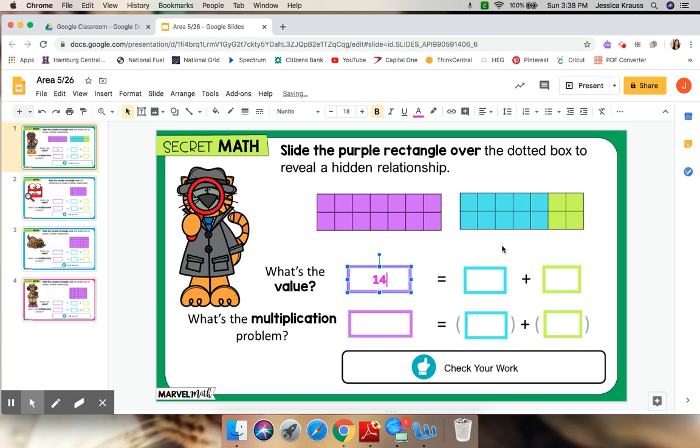Now over here it's split up into two different colors and we're going to start with the blue. So let's find out how many squares make up the blue portion. Two, four, six, eight, ten. The value of the blue is ten.